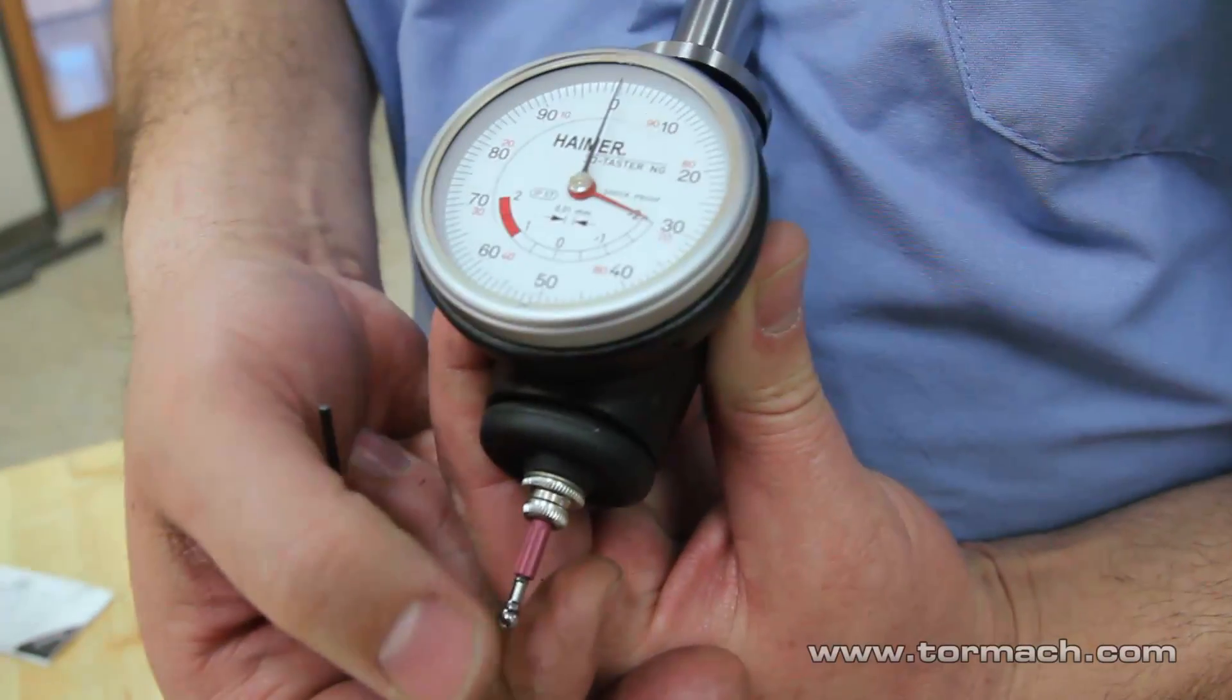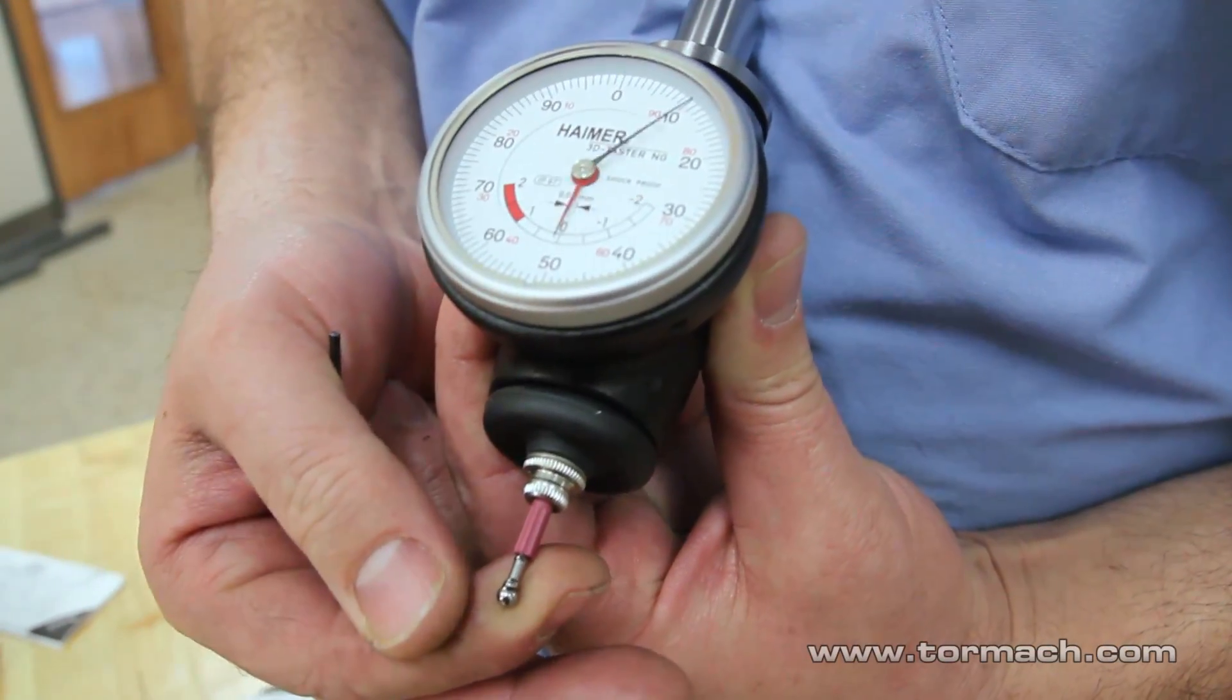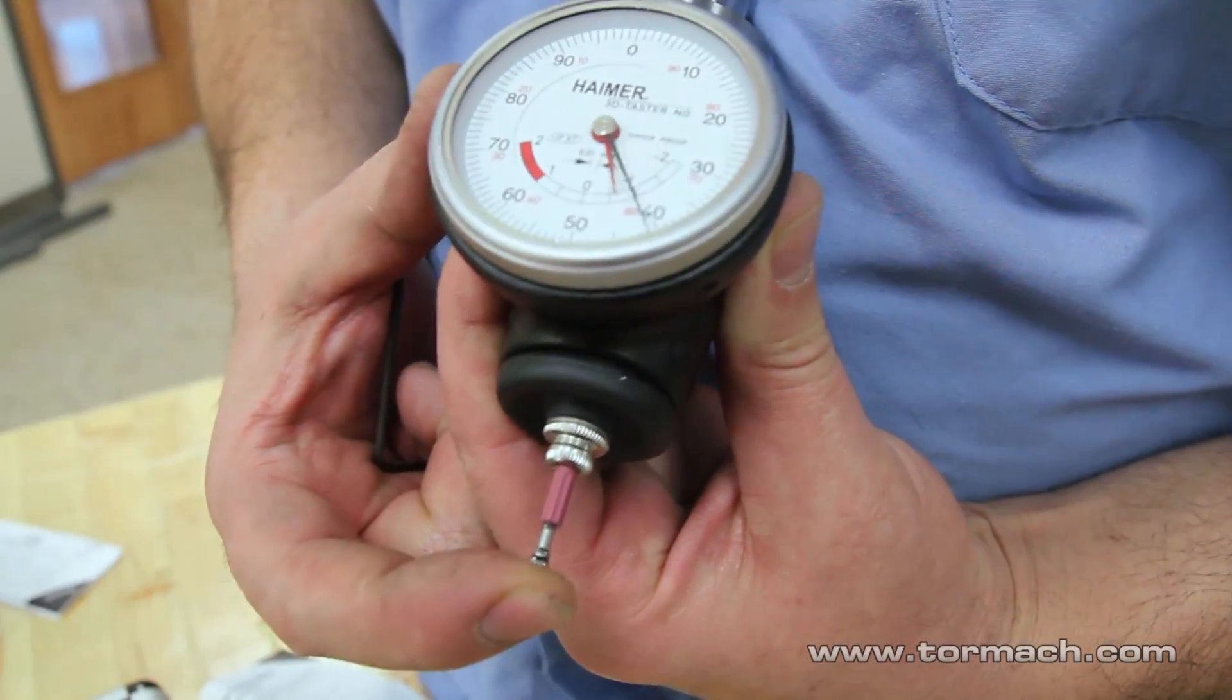Hi, Mike Corliss with Tormach. Today we're going to talk about the Hymer 3D sensor. It will measure in X and Y and also in Z. You can do your whole workpiece setup with one tool.